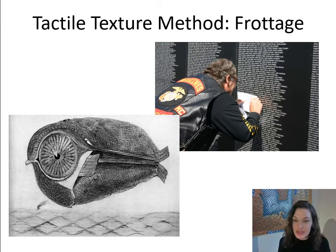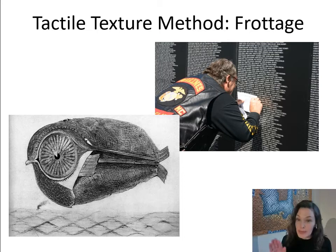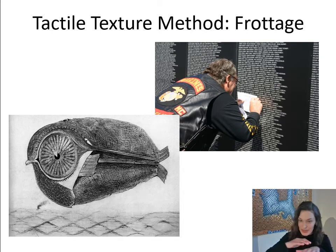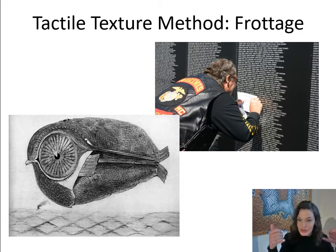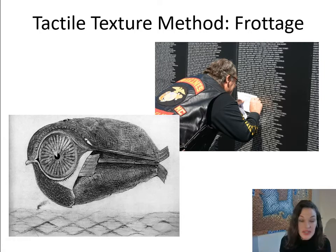Another example of tactile texture in art making is frottage, which is a rubbing. When you were a child, you probably put a piece of paper down over sticks or leaves, and your teacher might have had you do a rubbing with a crayon or pencil to create an image from the texture of the thing against which you were pressing. This technique is still used in artwork today.